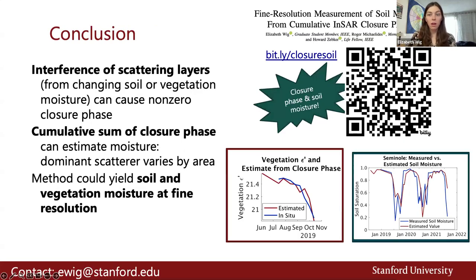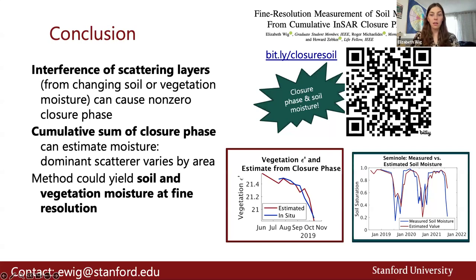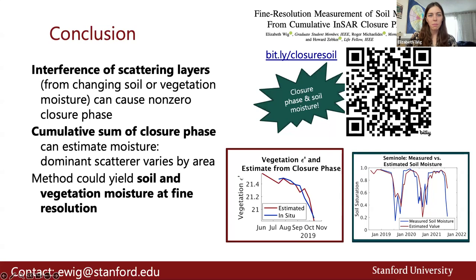In conclusion, we've shown with our model that non-zero closure phase can result from interference of a surface and scatterers at depth, such as varying soil and vegetation moisture with time. Cumulative closure phase can be used to estimate soil and vegetation moisture, and the dominant scatterer varies by area — there are probably most places where both have some amount of contribution to the closure phase signal. This method could yield soil moisture at finer resolution than is possible using radiometric remote sensing, opening up new possibilities for high resolution remote sensing of vegetation and soil moisture, especially because there's not a radar product that's measuring explicitly vegetation moisture. If you're curious to read more, check out my paper linked in the QR code. Thank you so much for your time — I'm happy to take any questions.